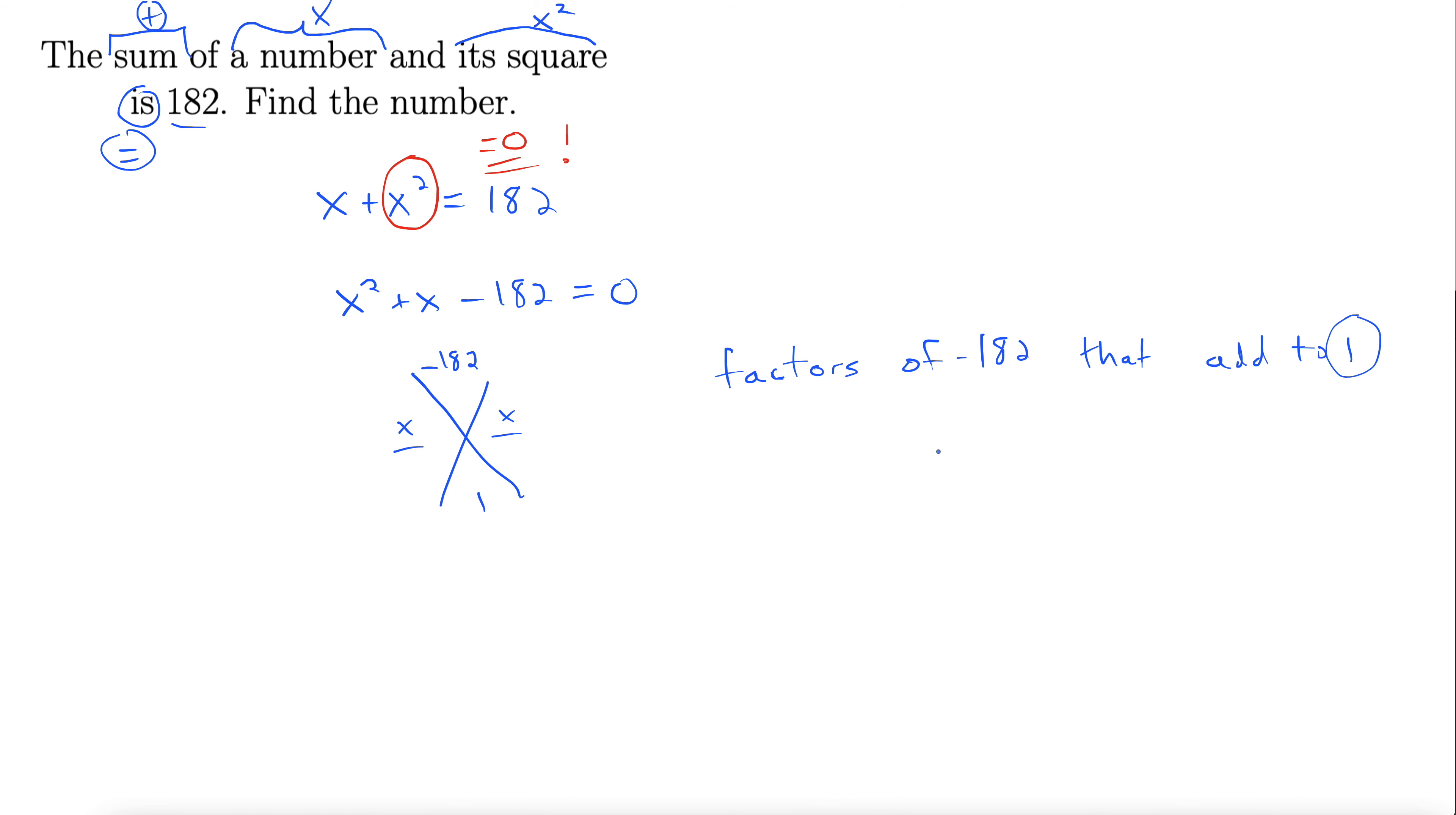When this is super small, you don't want to start with like 1 and 182. That's going to take forever. When this is small, like 1, 2, or 3, start in the middle. Here's the key to this: start in the middle.